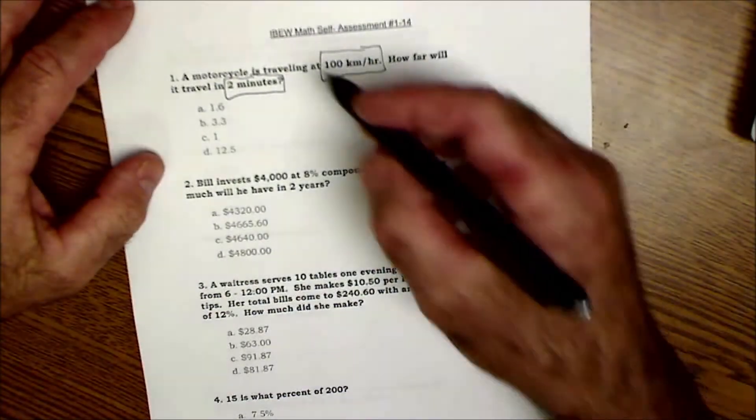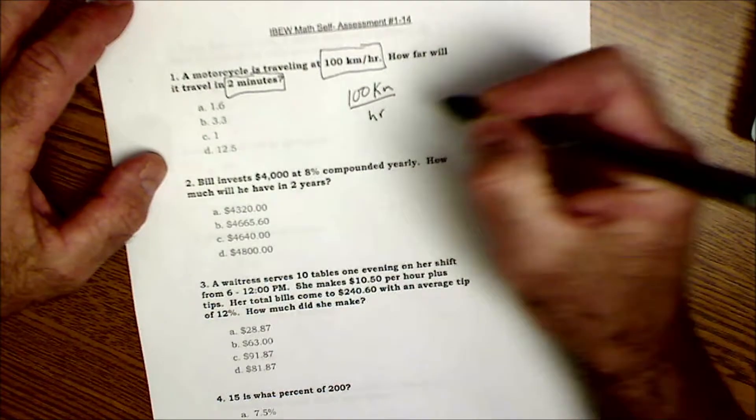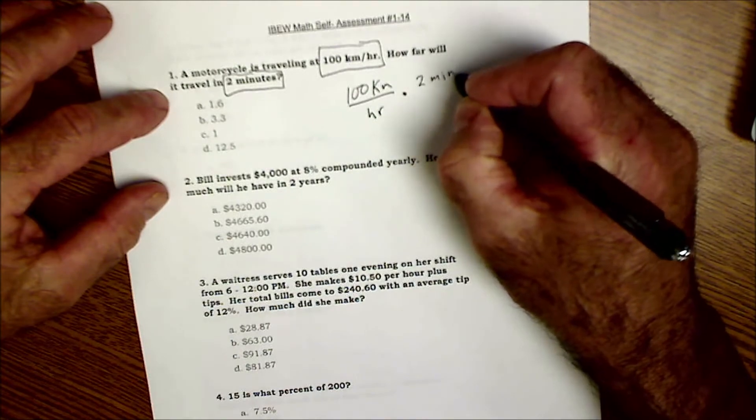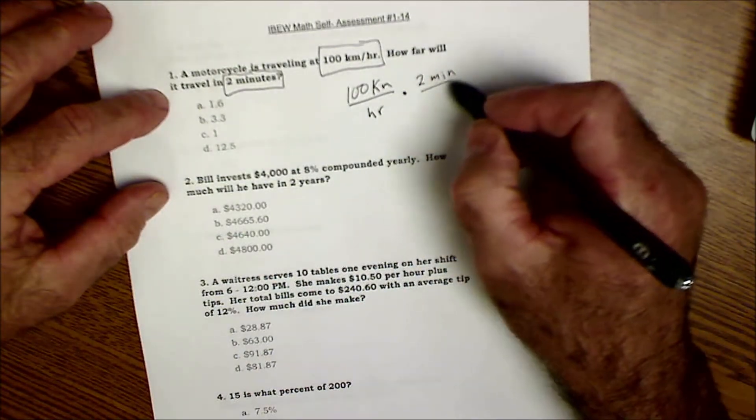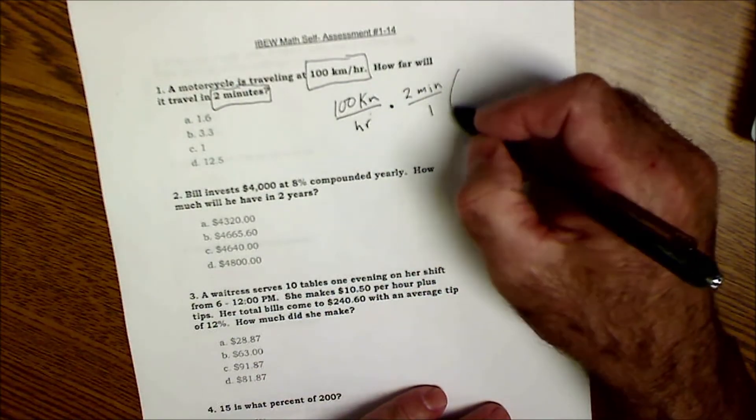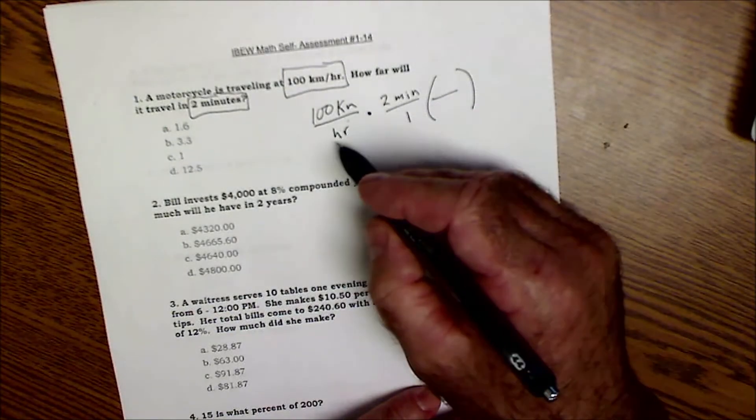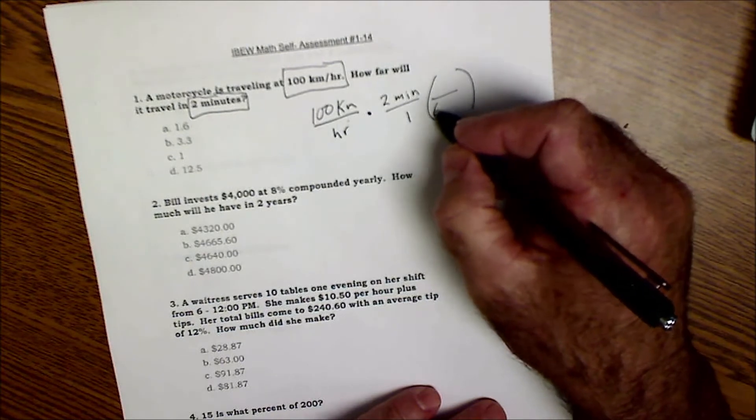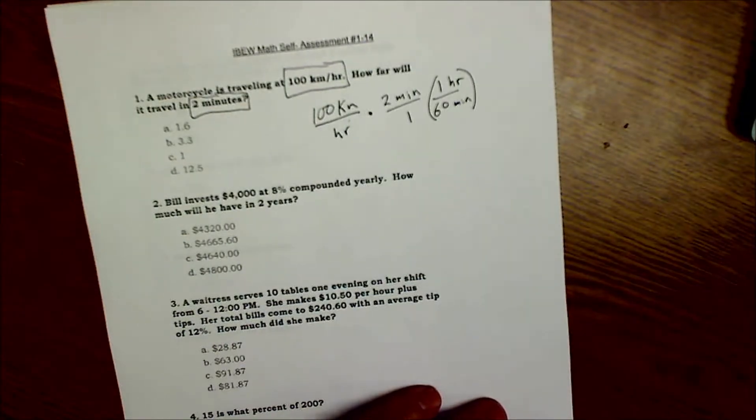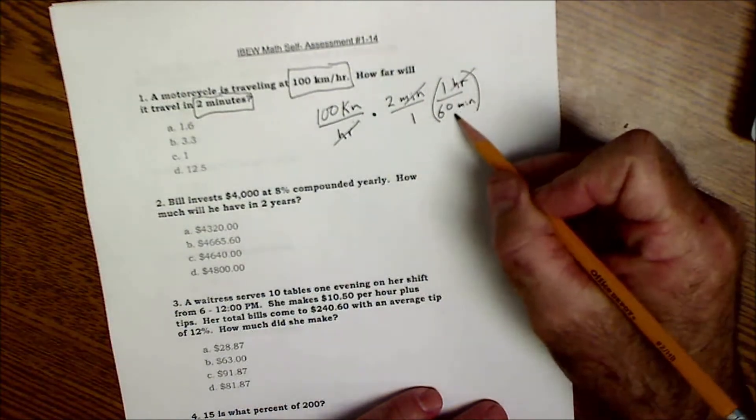All right, so let's go ahead and get started. A motorcycle is traveling 100 kilometers per hour. It's going to be a rate problem. How far will it travel in two minutes? So I'm going to multiply that by two minutes, so I'm really multiplying one fraction by another fraction, but these units won't cancel. An hour and a minute can't cancel, so what I have to do is multiply it by another factor of one so that my minutes and hours will cancel. There are 60 minutes in one hour, and once I do that I can see that now my units will cancel. Hours will cancel with hours, minutes with minutes.